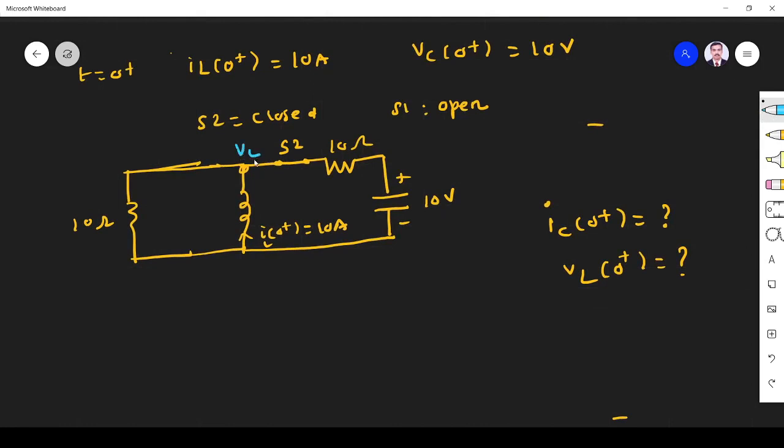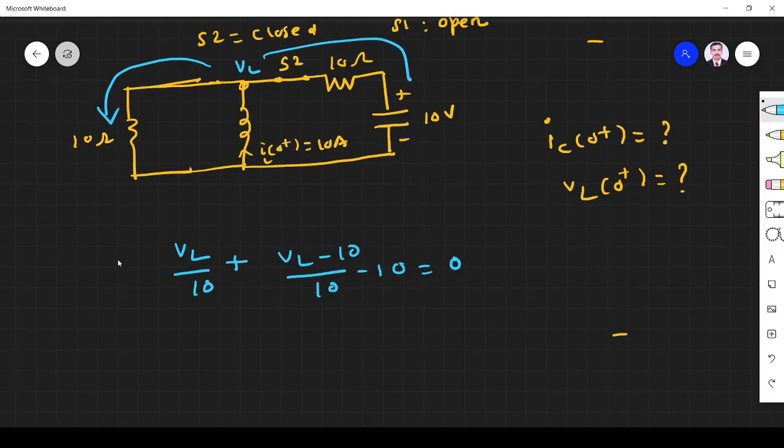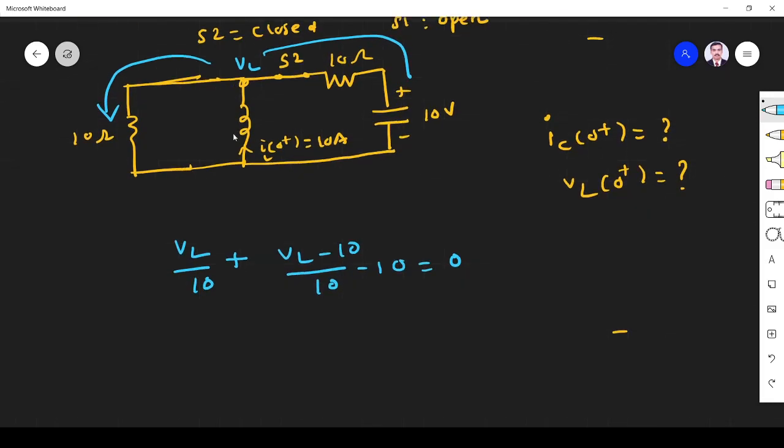So I apply nodal analysis. In this branch, it is V_L divided by 10. Plus here, V_L minus 10 divided by 10. The incoming current is 10 ampere, so minus 10 equals 0. In this way, I write the node equation for every branch. This is for the last one.